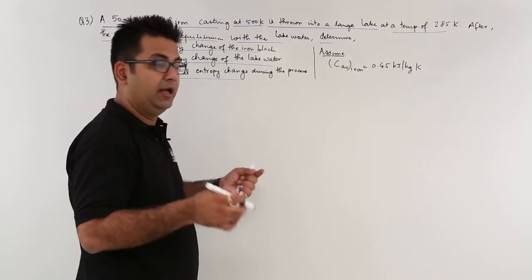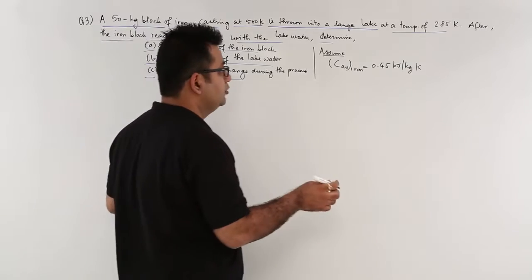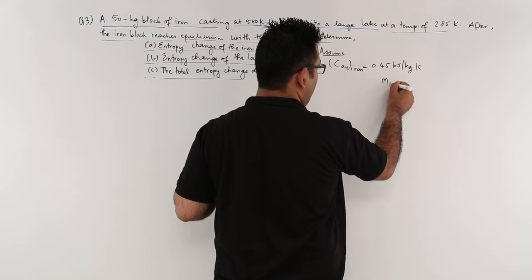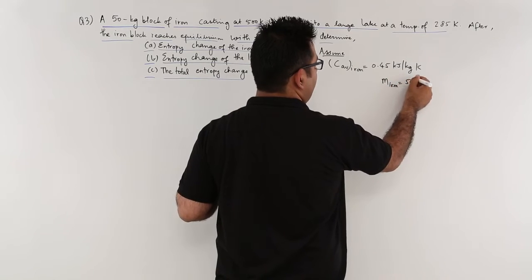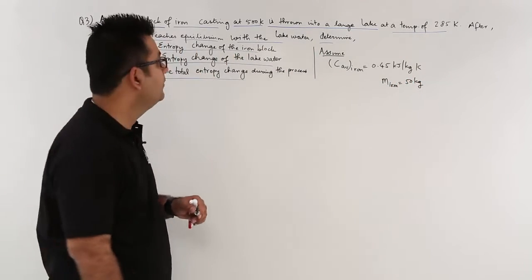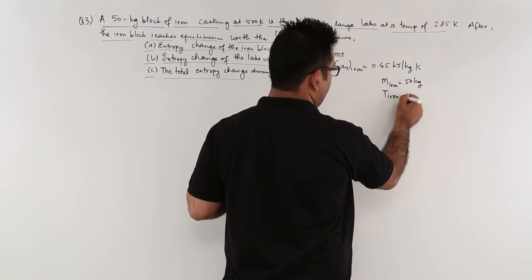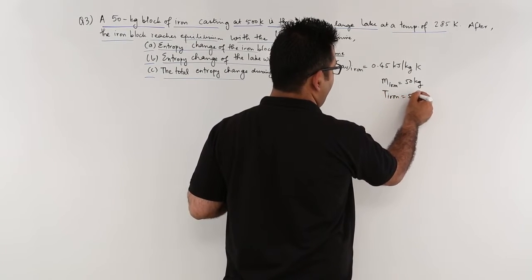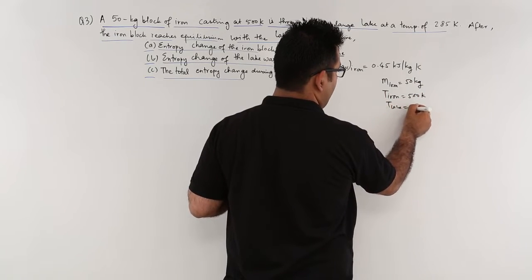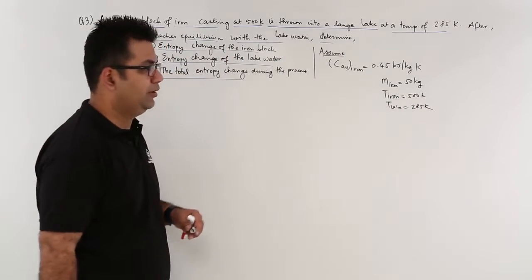Let's start by writing down the given data — that's the very first step you should always do. The mass of the iron block is 50 kg, the temperature of the iron block is 500 Kelvin, and the temperature of the lake is 285 Kelvin.